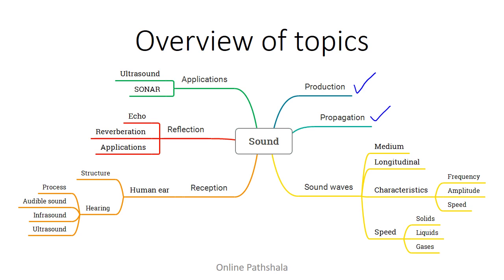When we learn about propagation, you will find out that sound travels as waves. That's where we put on our scientist hats and start looking at the different properties of sound waves — the requirement of a medium for sound waves to travel, and important characteristics such as frequency, amplitude, and the speed of sound waves. We also try to understand whether the speed of sound differs across solids, liquids, and gases.